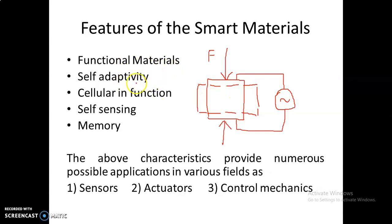Self-adaptivity: some materials will change their behavior according to environmental change. For example, if you change the temperature of that material, it will change its stiffness. This kind of material is known as shape memory alloys.